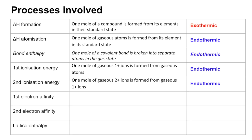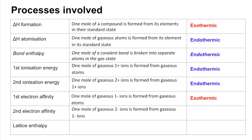First electron affinity is kind of the opposite of first ionization energy — it's the creation of one mole of gaseous 1− ions from gaseous atoms. That's exothermic because the electron is attracted to the atom and releases energy. The second electron affinity is creating gaseous 2− ions from gaseous 1− ions. That's endothermic because you're adding a negatively charged electron to a 1− ion, so they repel each other.